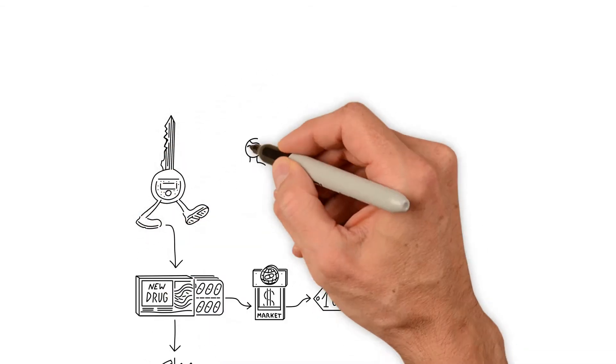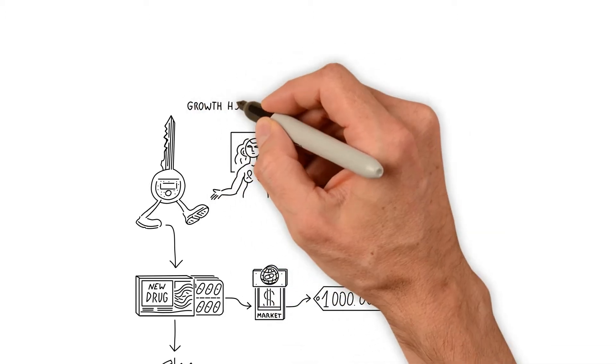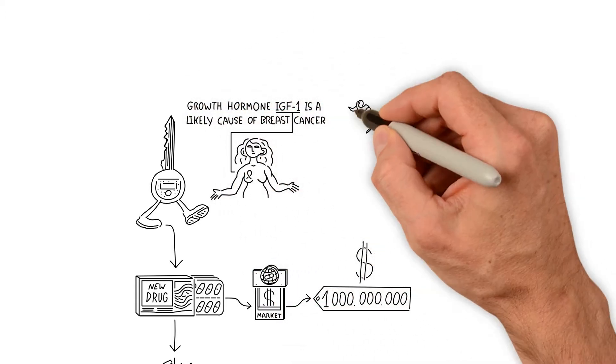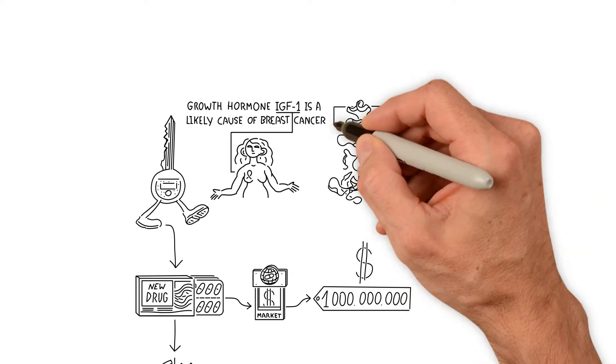A key step in developing a new drug is to identify a molecular target in the body that is directly involved in the disease process and whose function the drug must change.